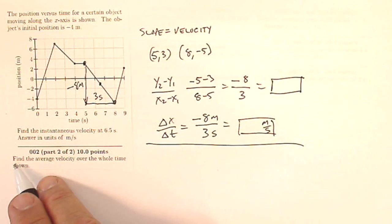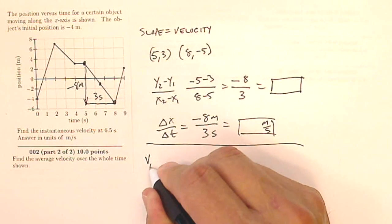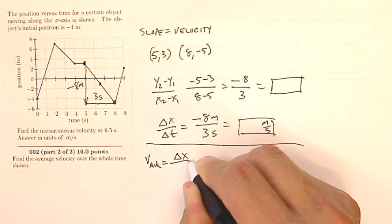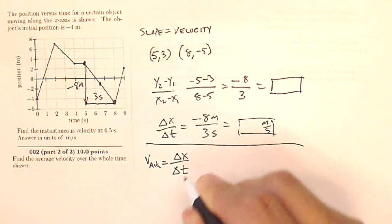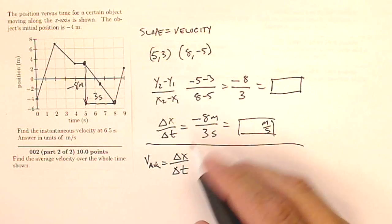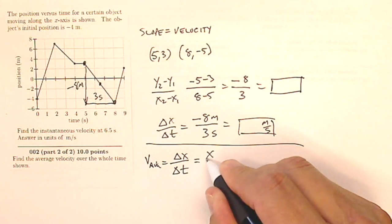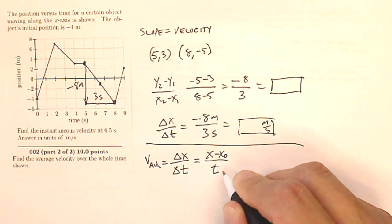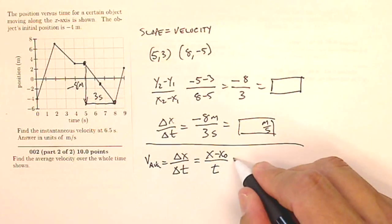The next part of this question asks, find the average velocity over the whole time shown. Well, average velocity, my average velocity, is going to be my total change in position over my total amount of time that has gone by. Well, my total change in position is going to be x minus x zero over my time, the total amount of time since I'm going from a time of zero.